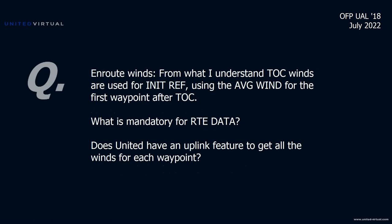Question from Tim: regarding en route winds for FMC — does United have an uplink feature for all waypoint winds? Yes. When you do the wind uplink, it calculates winds for each individual waypoint in the flight plan as it goes — not just an average component. It figures the wind between the altitude and each fix along the route.